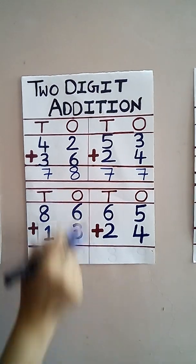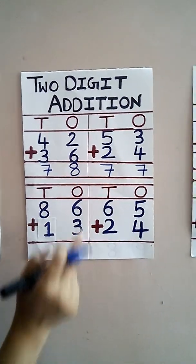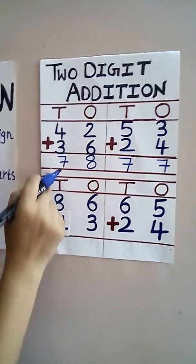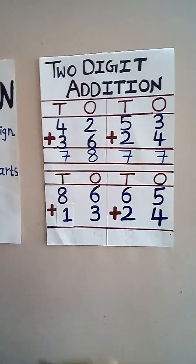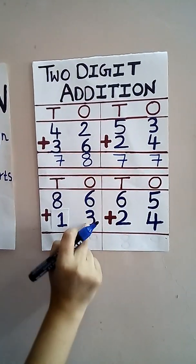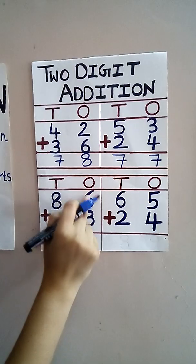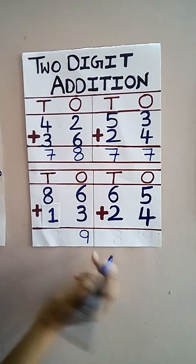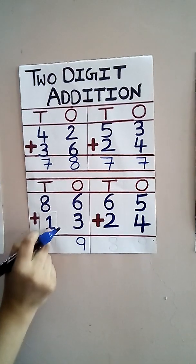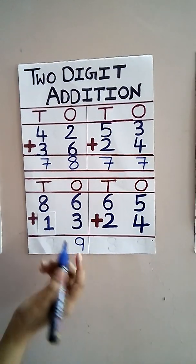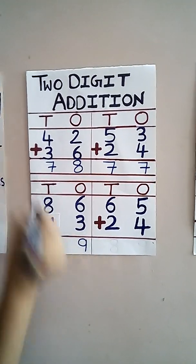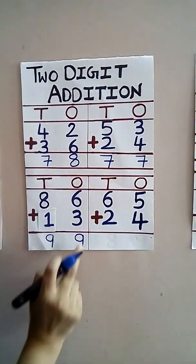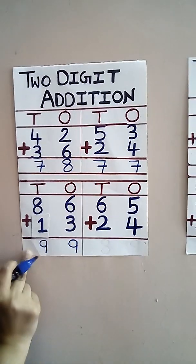Start from ones only. Don't start from tens — then it will be wrong. See, six plus three — add them: six, seven, eight, nine. Nine ones. Then eight plus one — again nine. Nine tens. Now we got ninety-nine.